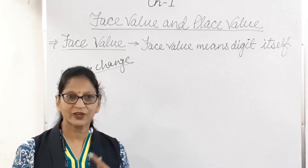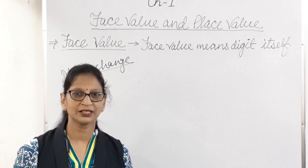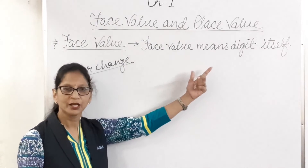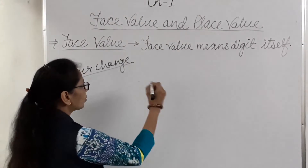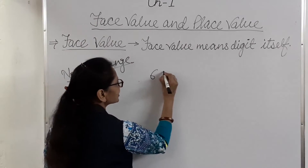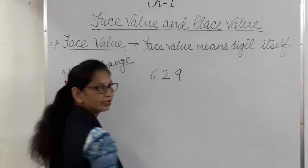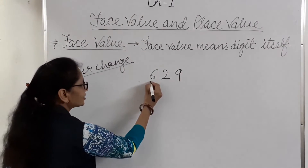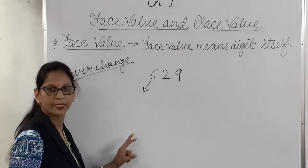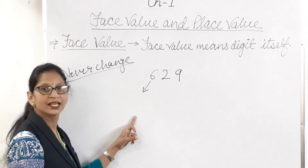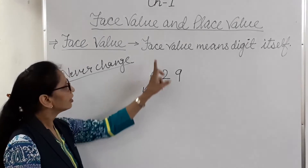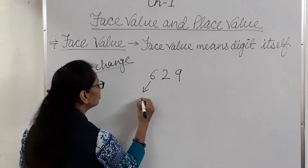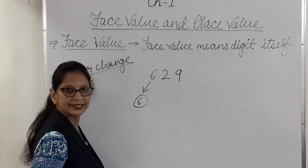Face value means the same number — it never changes. Suppose we have the number 629. So what is the face value of 6? Face value of 6 is 6 because face value means the digit itself. So face value of 6 is 6.